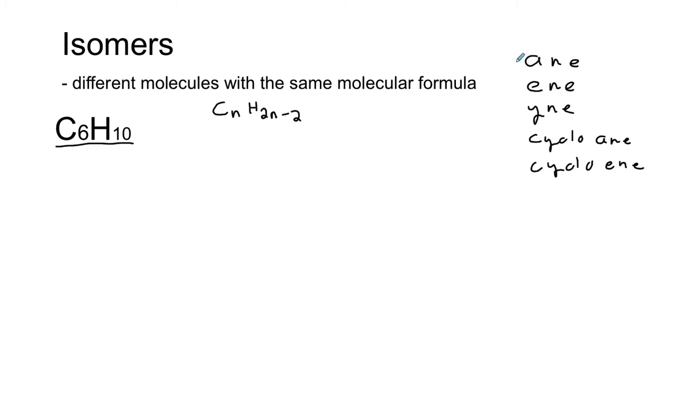Then we want to think of when do we have that pattern. Enes are CN H2N. So there's no way we could draw any ene isomers. We just don't have enough H's. Same with enes. Those would be 2N hydrogen count compared to carbon count. Ines are 2N minus 2 hydrogen count. So that's a possibility.